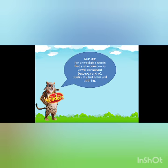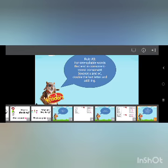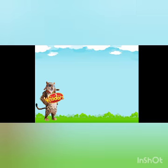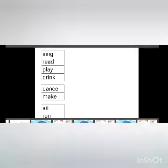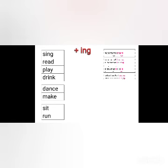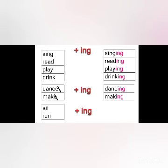Rule number three: for one-syllable words that end in consonant-vowel-consonant, except X and W, double the last letter and add ING. So we have two of the last letter instead. Sit plus ING equals sitting. Run plus ING equals running. Thanks for listening, bye-bye!